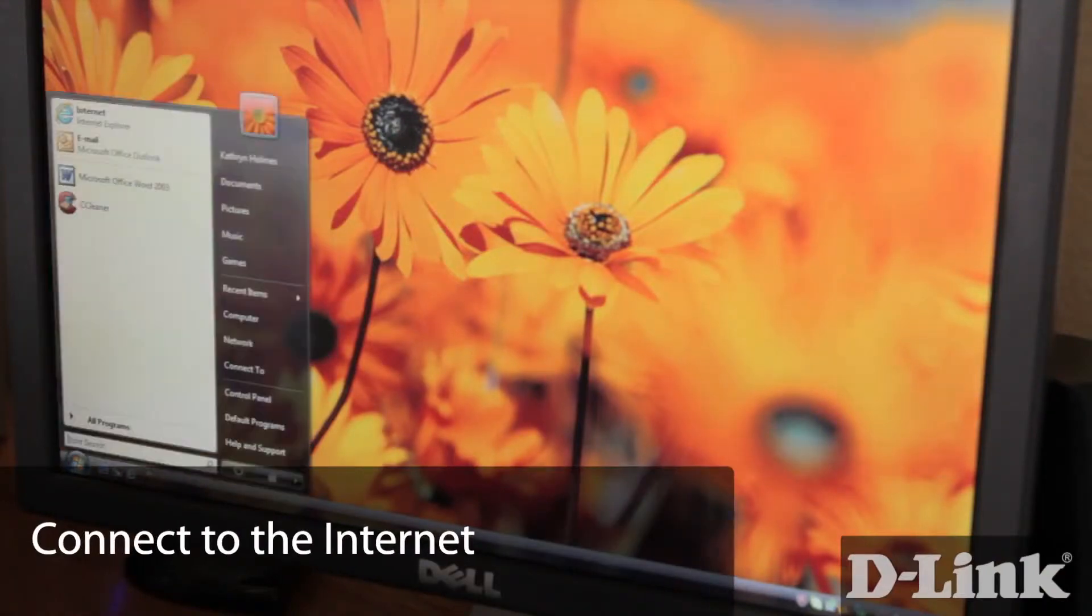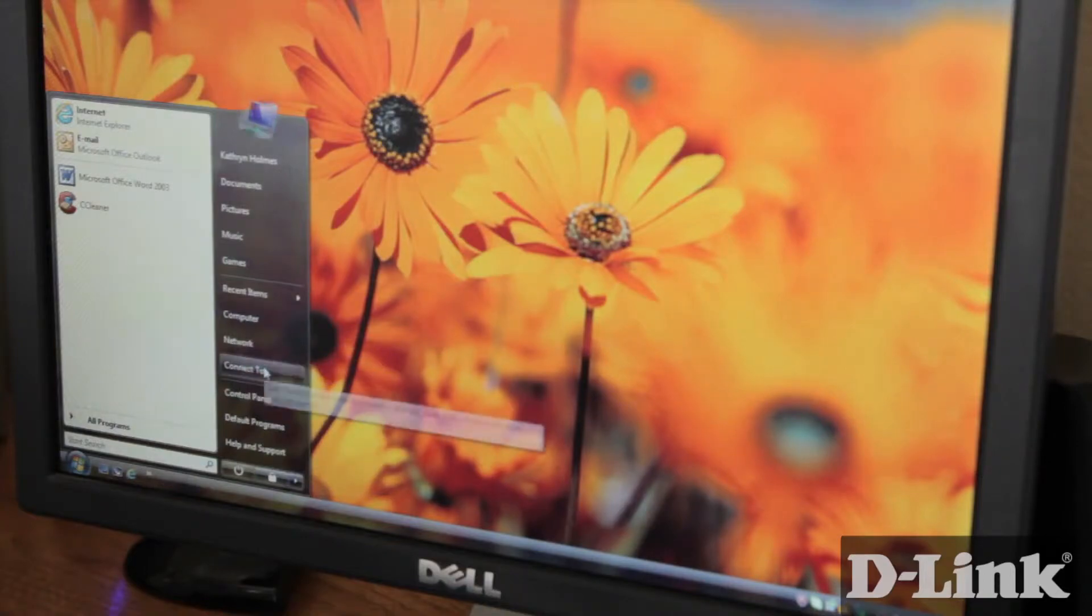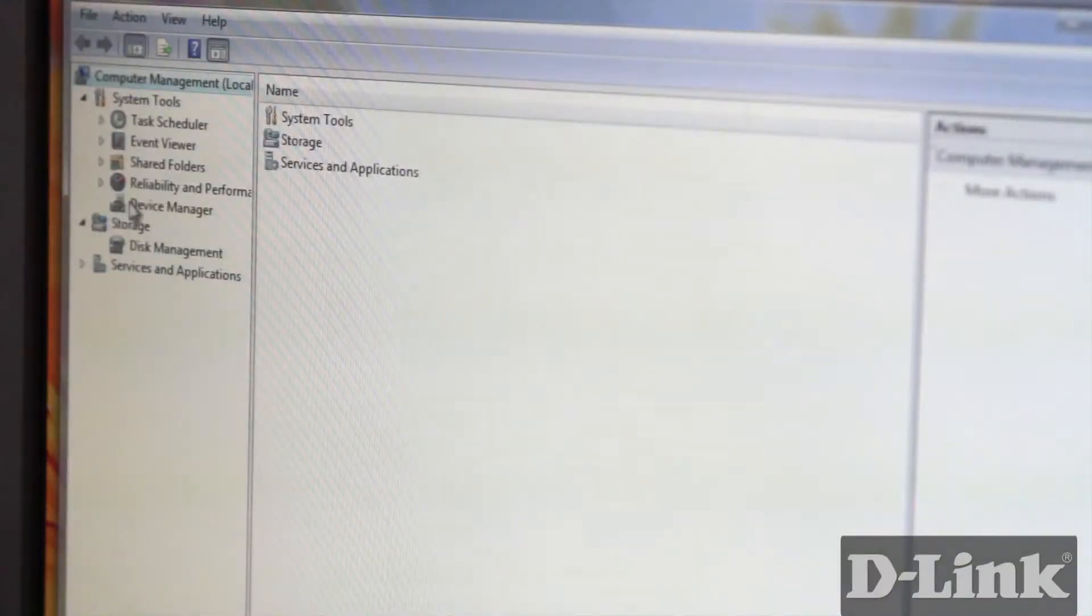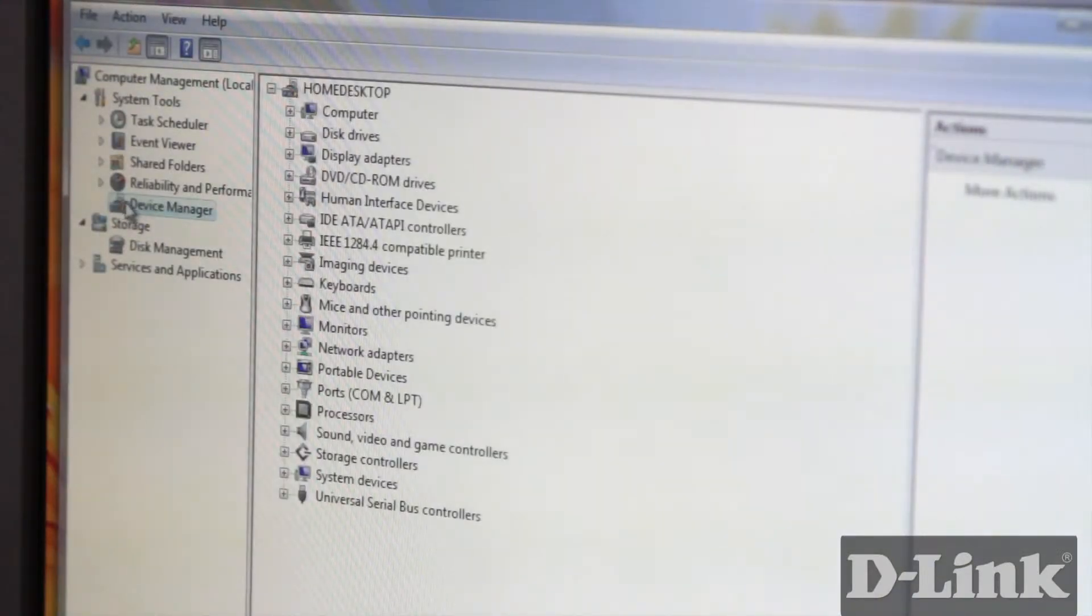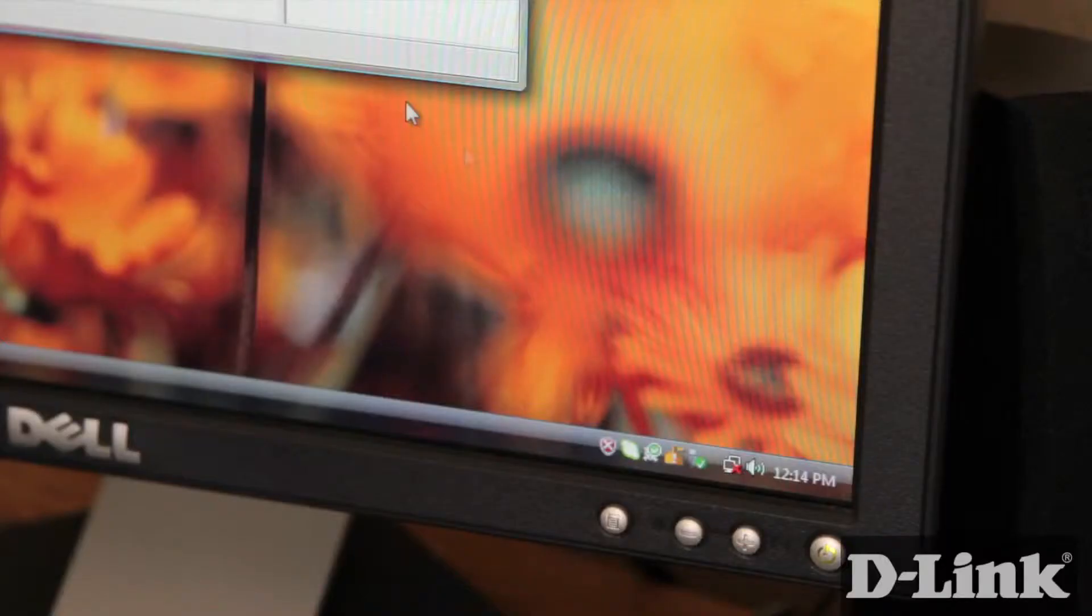But, to verify the installation was successful and to connect to the internet, login to your computer. Click on the Start button, right click on Computer, and click on Manage. This will bring up the Computer Management window. Click on Device Manager from the left navigation, and expand Network Adapters. If you see the DWA-556 listed, all you need to do now is to connect to your wireless network.